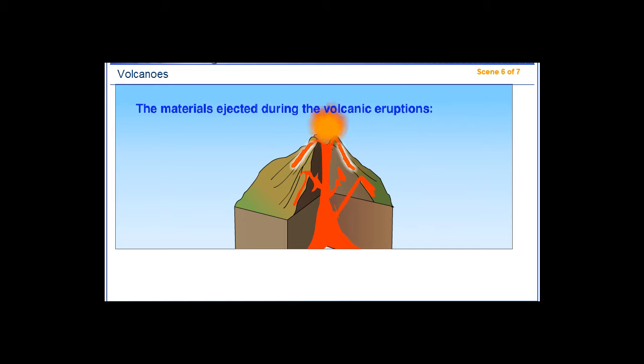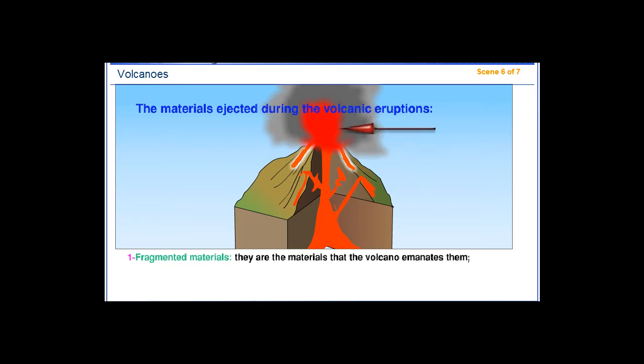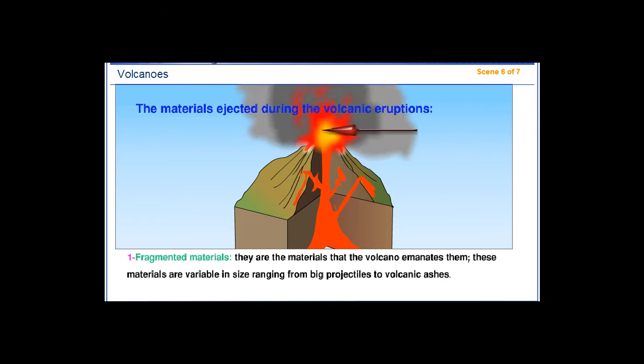The materials ejected during volcanic eruptions. First, fragmented materials. They are the materials that the volcano emanates. These materials are variable in size, ranging from big projectiles to volcanic ashes.